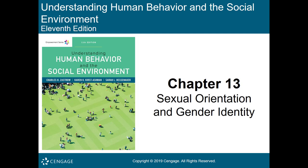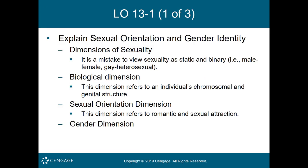We're now on chapter 13, Sexual Orientation and Gender Identity. Learning objective one is to explain sexual orientation and gender identity. Sexual orientation is a dimension that refers to romantic and sexual attraction. Most individuals are heterosexual and are attracted to the opposite sex.